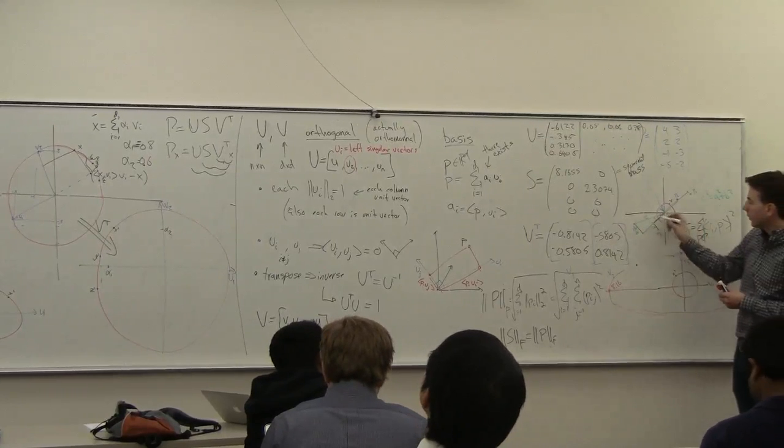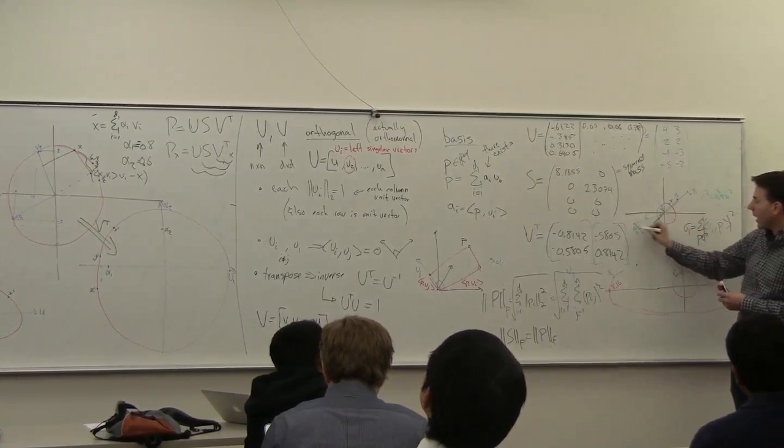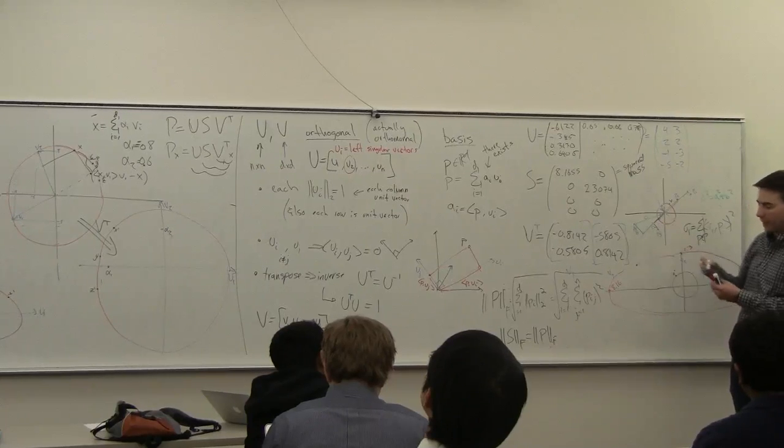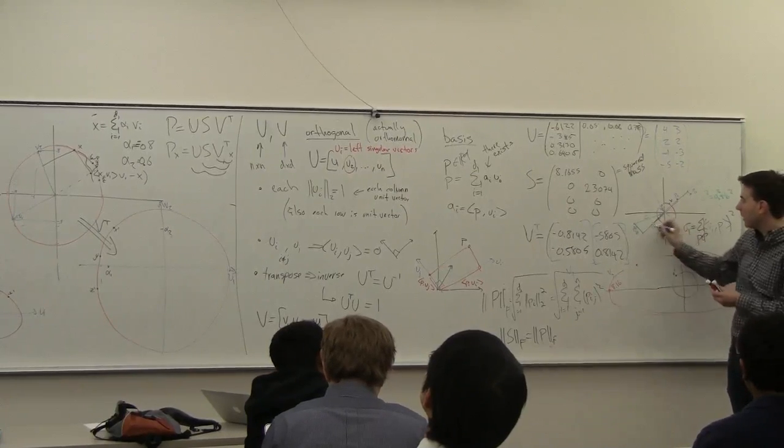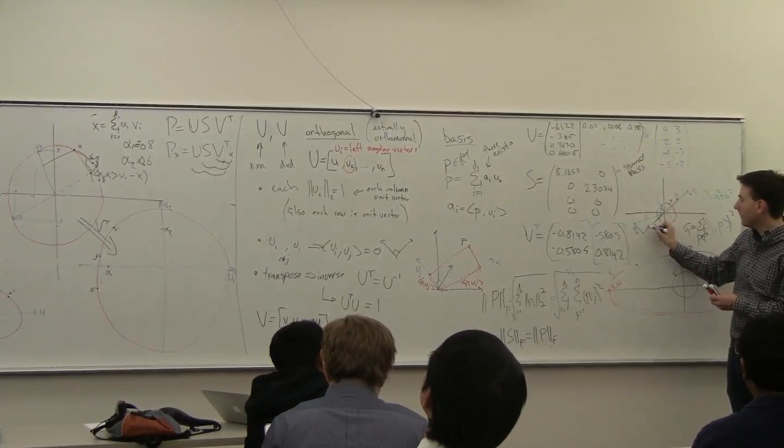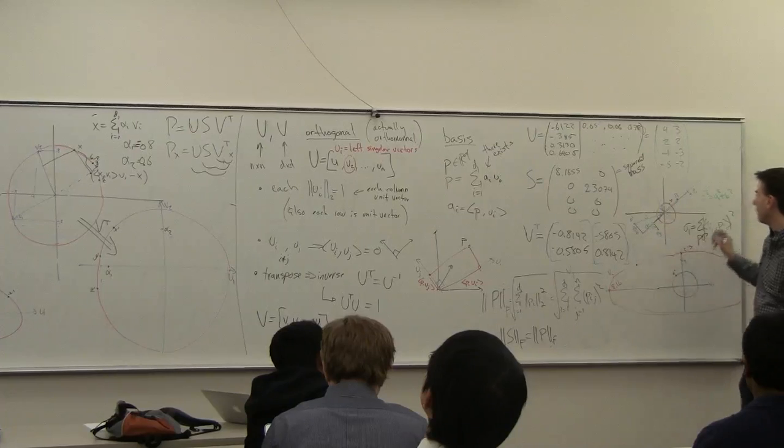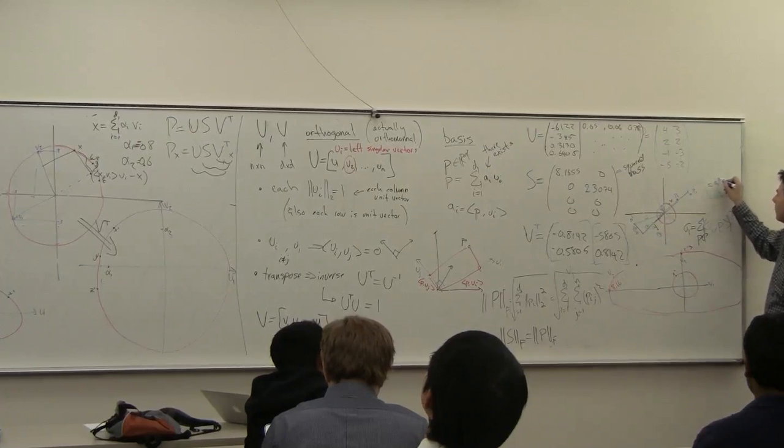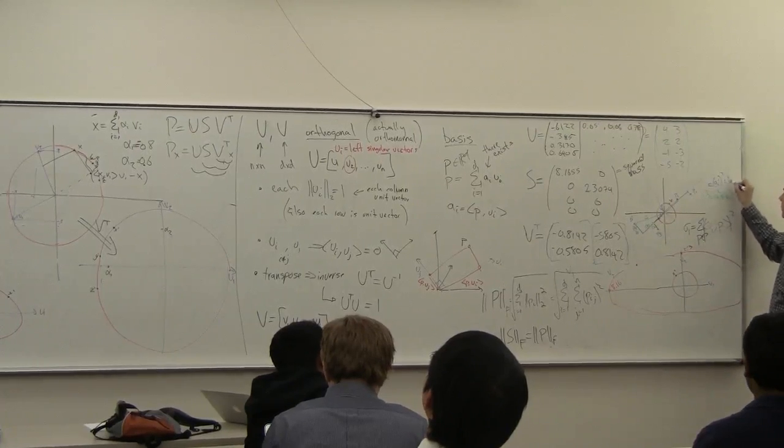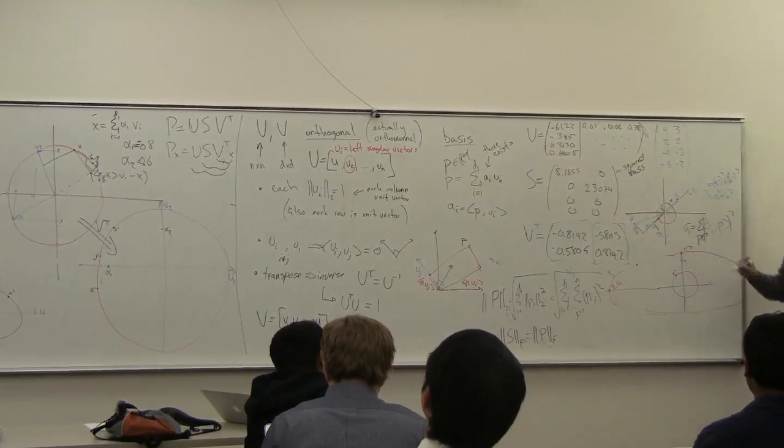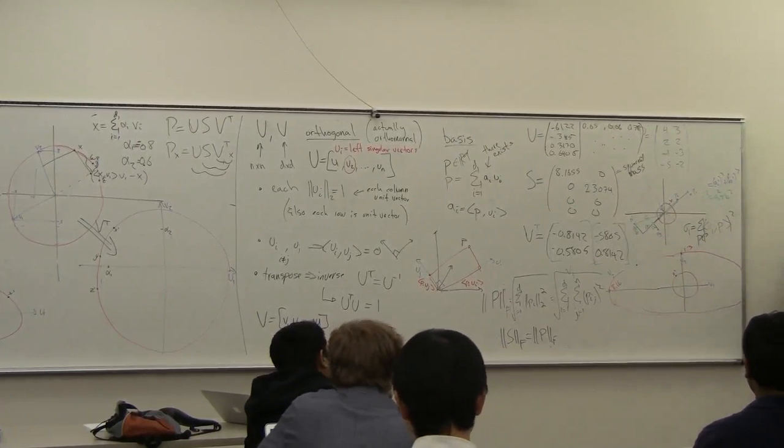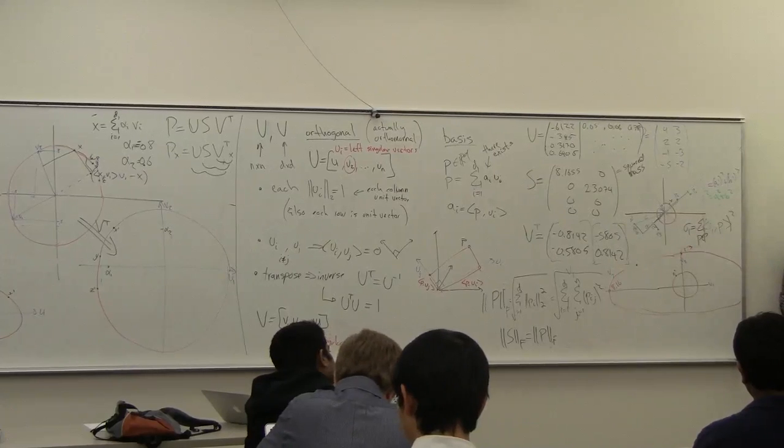It's also true that I could also, so that A and B correspond to these, the black lines, and the green lines corresponded to this A prime and B prime, then this is also equal to A prime squared plus B prime squared. It's just a different decomposition. So squared length you can decompose like this.